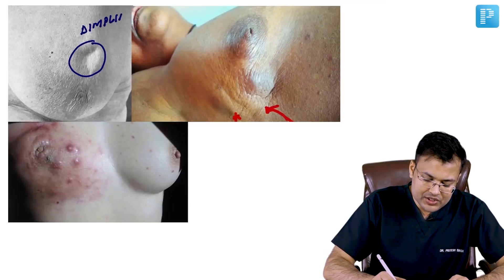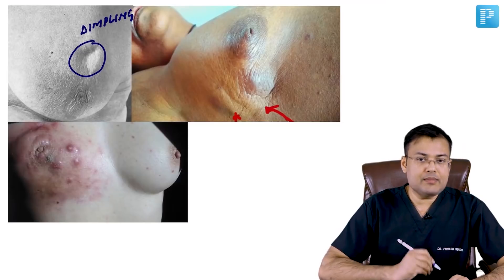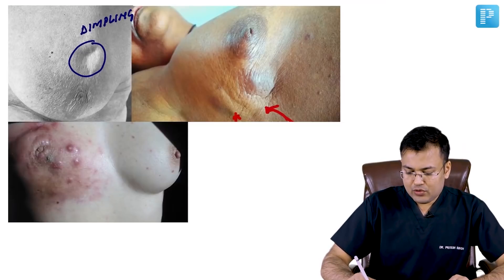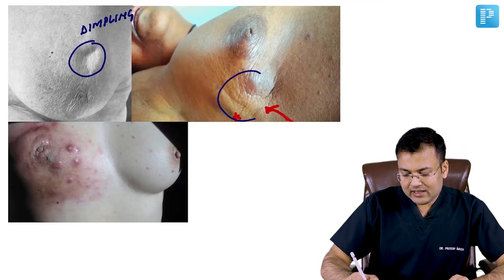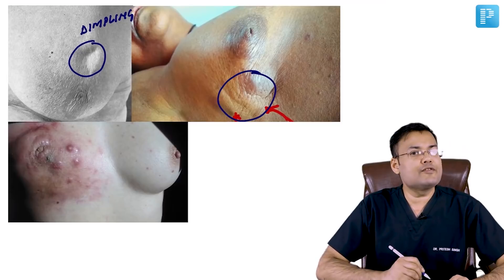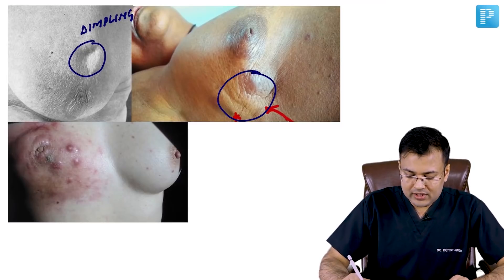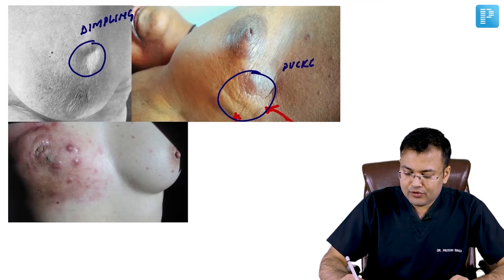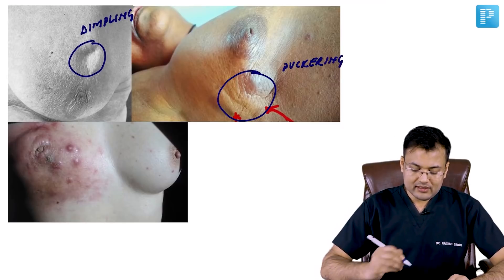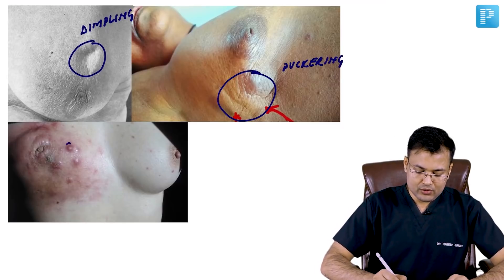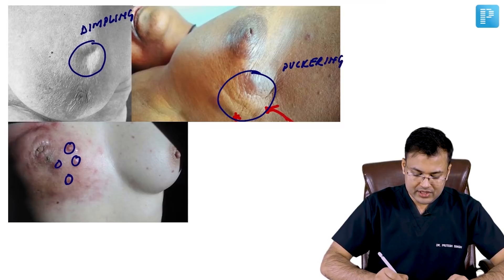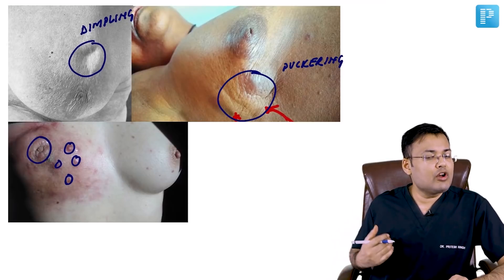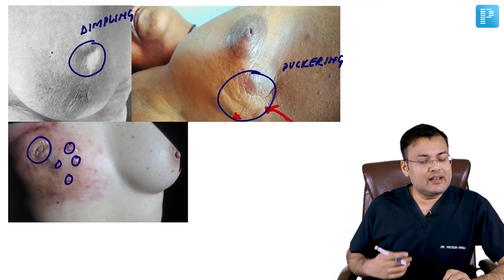Small skin depression is called dimpling. Here you can notice that there is skin fold or wrinkling, and this is known as puckering. In the third one, you can notice that there are multiple nodules and ulceration involving the breast skin.